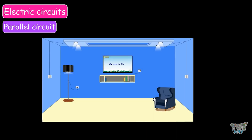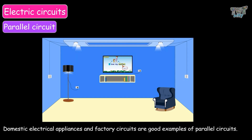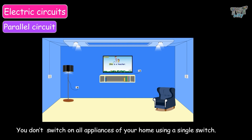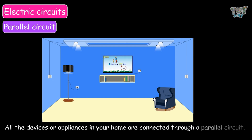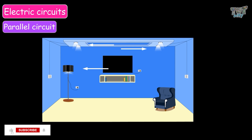Think of all the tube lights in your home. If one tube light burns out, the other tube lights will still work because they are connected in parallel. Domestic electrical appliances and factory circuits are good examples of parallel circuits. You don't switch on all the appliances of your home using a single switch. All the appliances in your home are connected through a parallel circuit, so if one device burns out, it does not affect the other appliances.